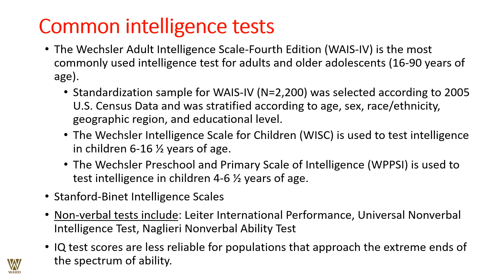Common intelligence tests include the Wechsler Adult Intelligence Scale — WAIS-4 — the most commonly used test for older adolescents and adults. Its standardized sample is approximately 2,200, stratified by the 2005 U.S. Census for age, sex, race, ethnicity, geographic location, and education level. The Wechsler Intelligence Scale for Children covers ages 6 to 16½. The Wechsler Preschool and Primary Scale of Intelligence covers ages 4 to 6½. The Stanford-Binet also includes novel non-verbal linguistic tests. IQ test scores are less reliable at the extreme ends of the spectrum.